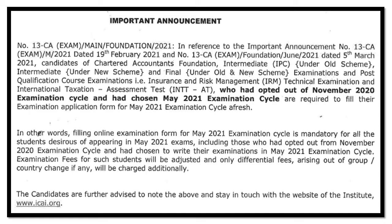Obviously, those who opted for January 2021 — their exams have already happened. It was a fact that you did not have to fill the form again if you were appearing for January 2021. But if you opted out and chose the May 2021 examination cycle, then you have to fill the examination form afresh. You have to fill the examination form application for May 2021 examination cycle afresh — very clearly.